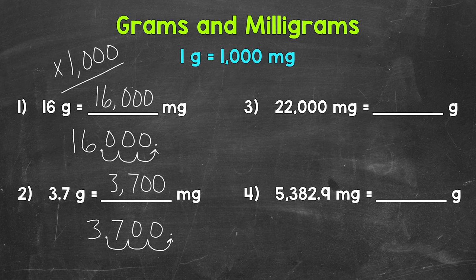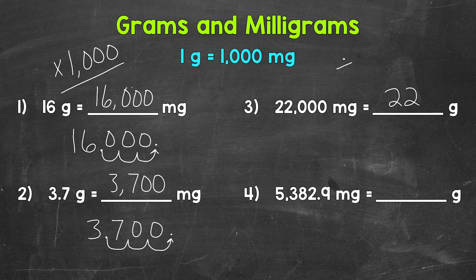To recap: when we go from grams to milligrams, multiply by one thousand, and we can do that by moving the decimal three times to the right. Let's move on to number three, where we have 22,000 milligrams equals how many grams? Well, each group of 1,000 milligrams equals a gram, so we need to see how many groups of 1,000 are in 22,000 — meaning 22,000 divided by 1,000. That gives us 22. So when we go from milligrams to grams, we divide by 1,000.